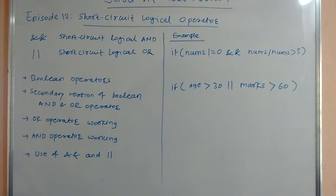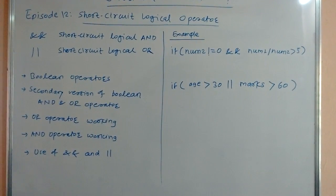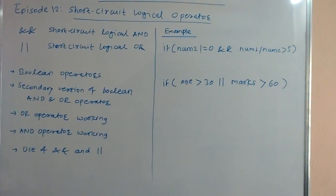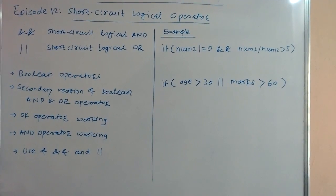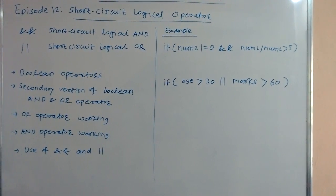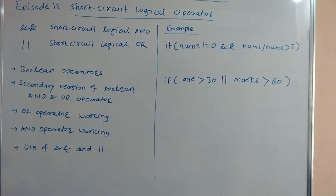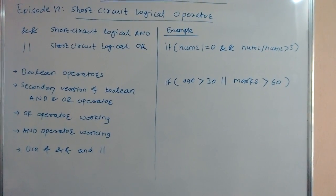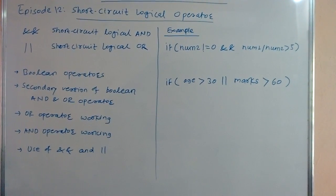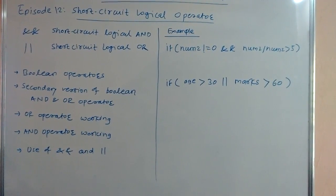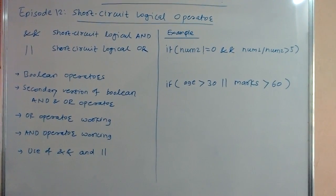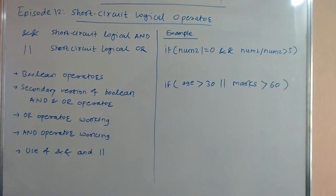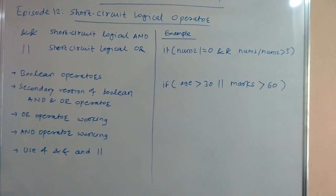In this example, if the result of the first expression — number two is not equal to zero — is false, then it is not necessary to check the result of the second expression, because ultimately it results in false.